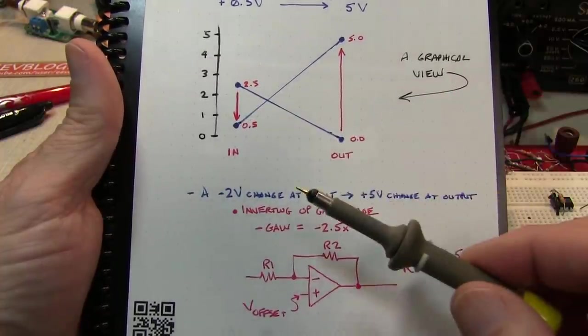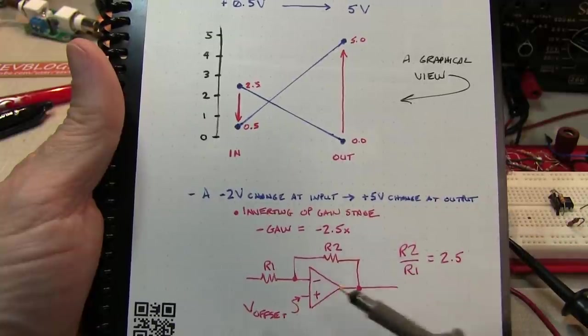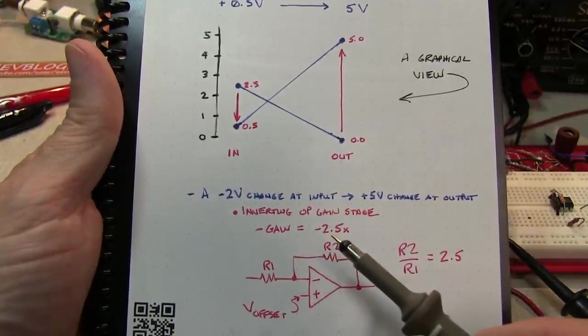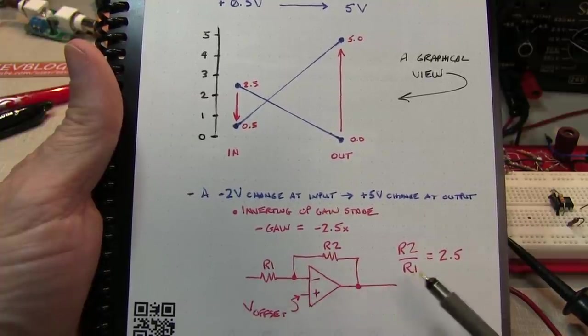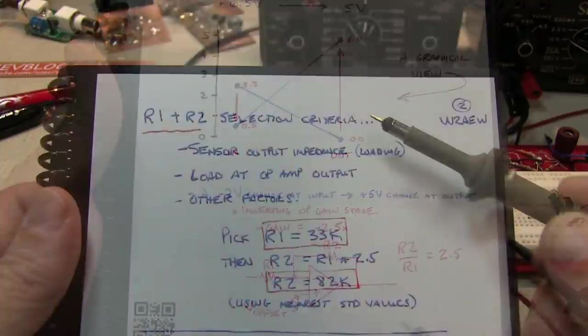The gain that we want to have is, we've got a 2 volt change at the input, we want a 5 volt change at the output. So that tells us we want a gain of minus 2.5. That tells us that the ratio of R2 to R1 is going to be 2.5.